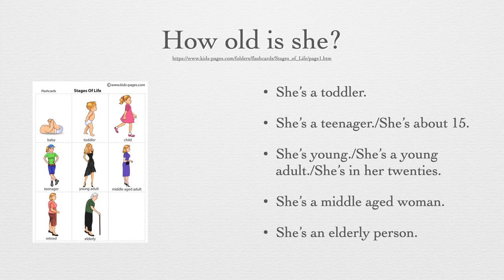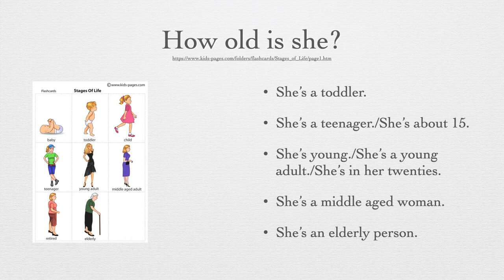How old is she? She's a toddler — toddler, because she's toddling. Essa criança ali de mais ou menos um, dois anos, quando tá aprendendo a andar. So, baby, toddler, child, and then teenager. She's a teenager — she's about 15. She's young. She's a young adult — she's in her 20s. Ela é jovem adulta, ali em torno dos 20.